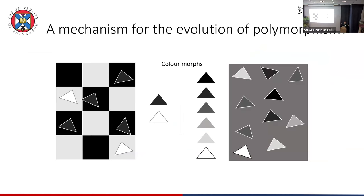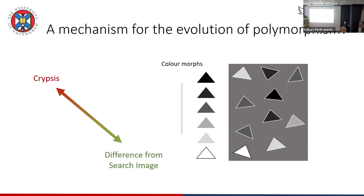The idea is that predators using search images to overcome camouflage will exert pressure within species where common colour forms are predated heavily. The flip side of search image use is that looking different means you're more likely to evade a search image. Coming back to the general polymorphism — this presents a potential explanation for why we see general polymorphism: general camouflage in an environment but at the same time lots of variation.